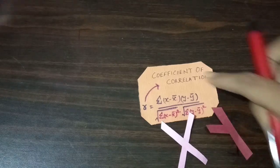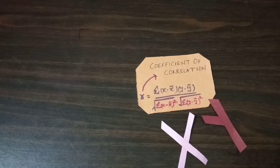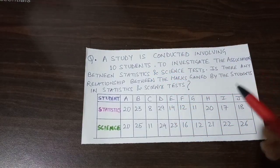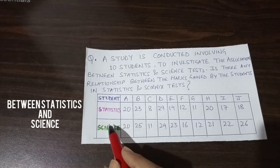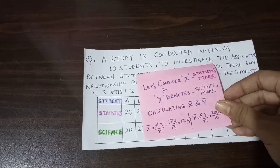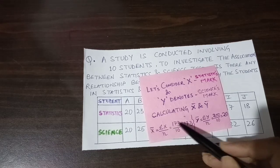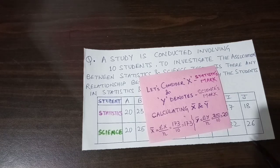Let us take an example. A study is conducted involving 10 students to investigate the association between statistics and science test scores. The question is: is there any relationship between statistics and science? Here are the marks given for the statistics and science paper for all the students. We consider X as the statistics mark and Y as the science mark. We first calculate the mean: X mean equals 17.3 and Y mean equals 20.